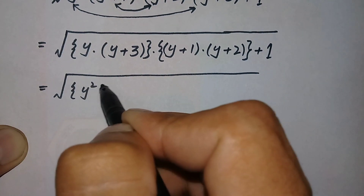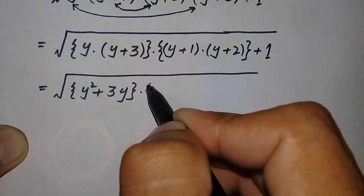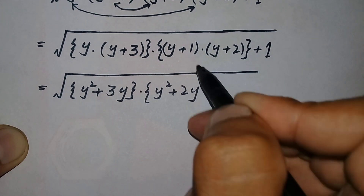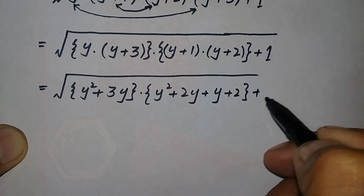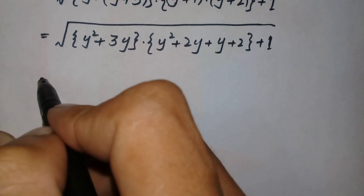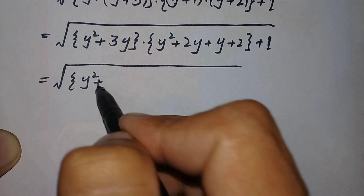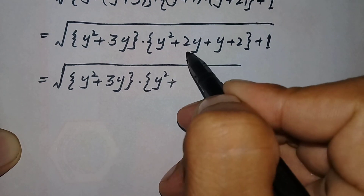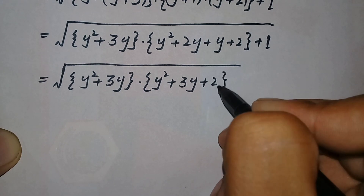Multiplying the expressions inside the braces: y times (y plus 3) gives y squared plus 3y, and (y plus 1) times (y plus 2) gives y squared plus 2y plus y plus 2, which is y squared plus 3y plus 2. So we have the square root of (y squared plus 3y) times (y squared plus 3y plus 2) plus 1.